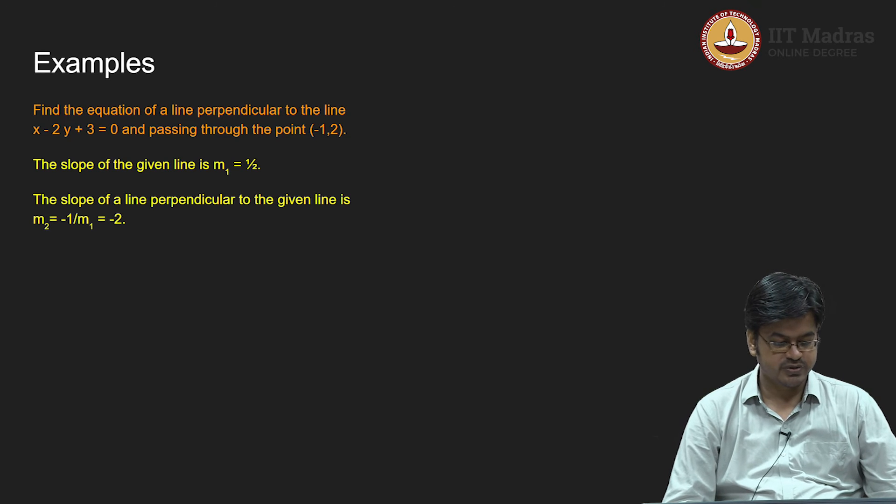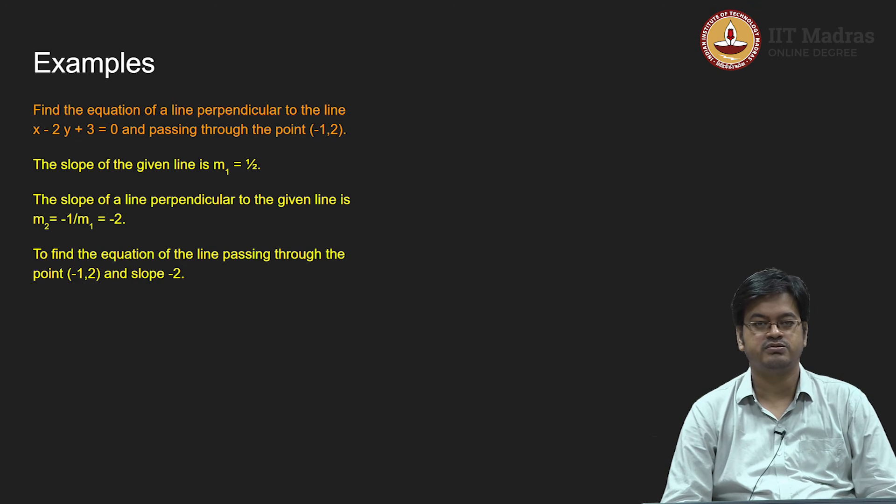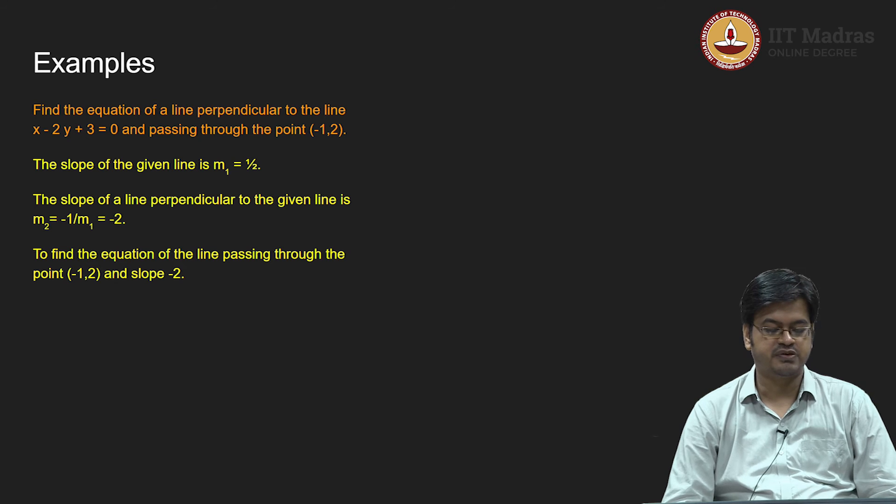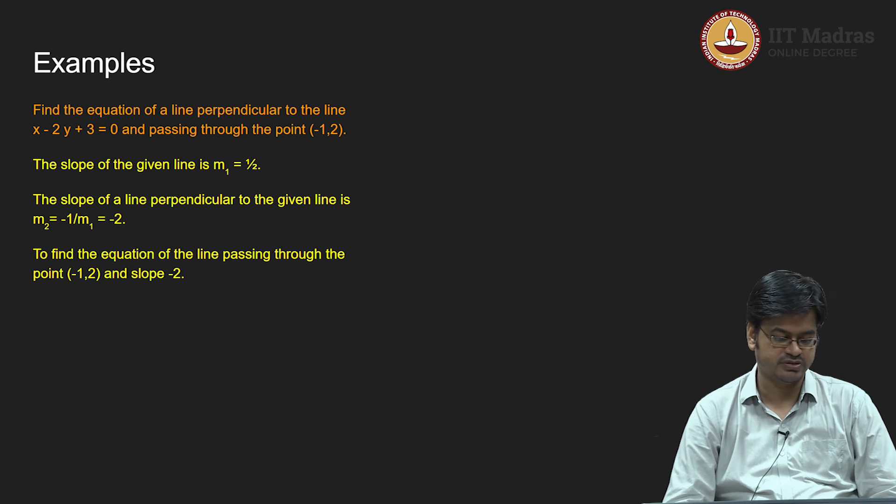Now the problem reduces to: the slope of the given line is minus 2 and it passes through point minus 1 comma 2. I want to find the equation of a line passing through point minus 1 comma 2 with slope minus 2.